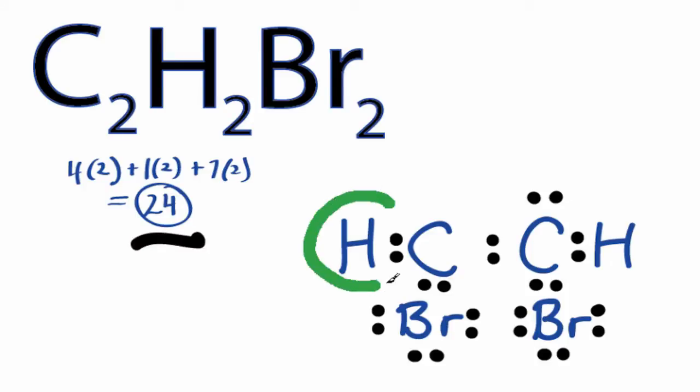Hydrogens have 2 valence electrons, so their outer shells are full, and everything else has 8 valence electrons, except this central carbon here.